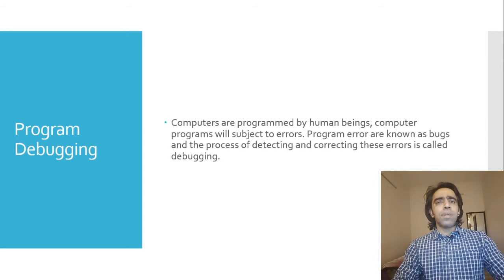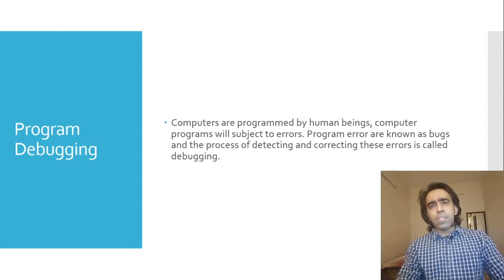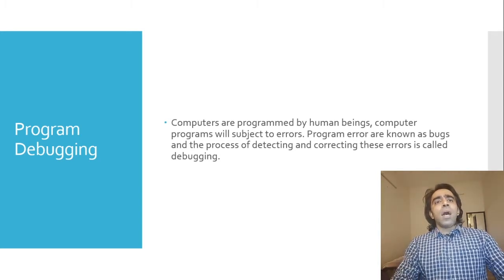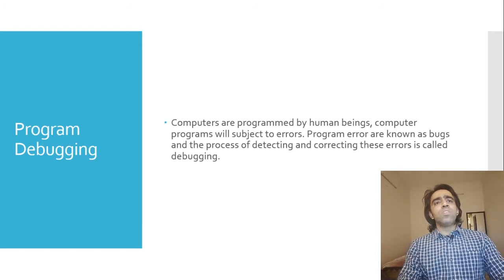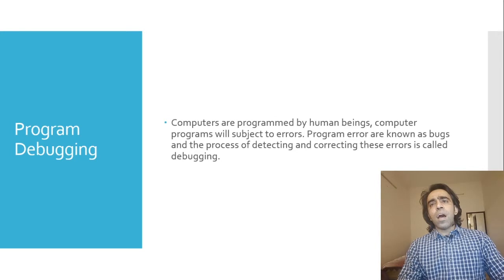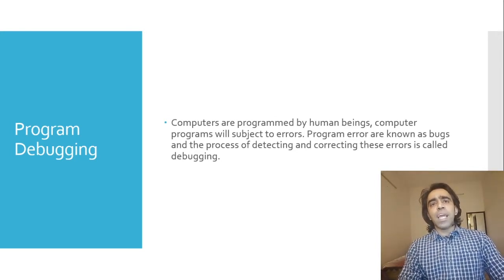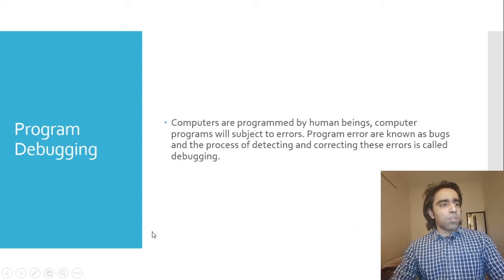Moving onward, we will have a look at program debugging. Computers are programmed by human beings. Computer programs are subject to errors. Program errors are known as bugs, and the process of detecting and correcting these errors is called debugging.